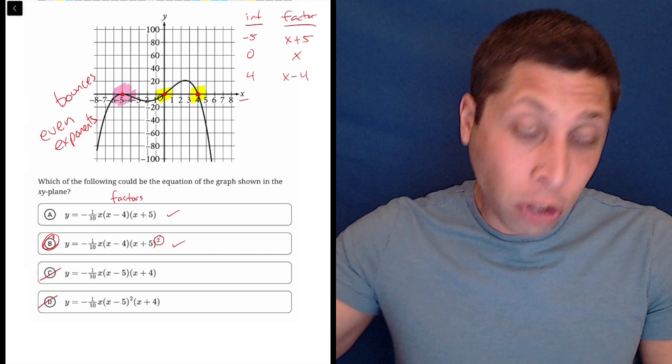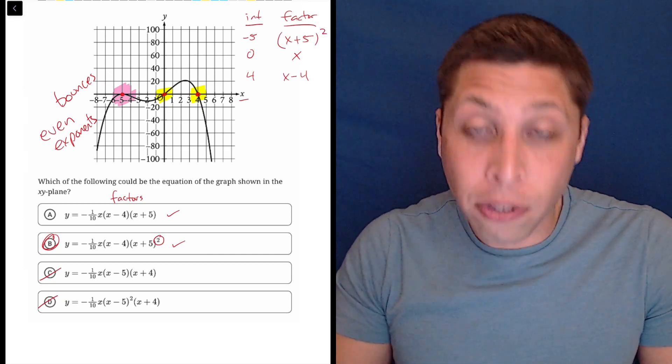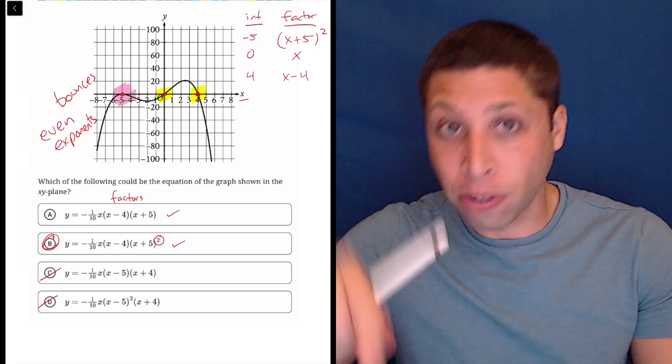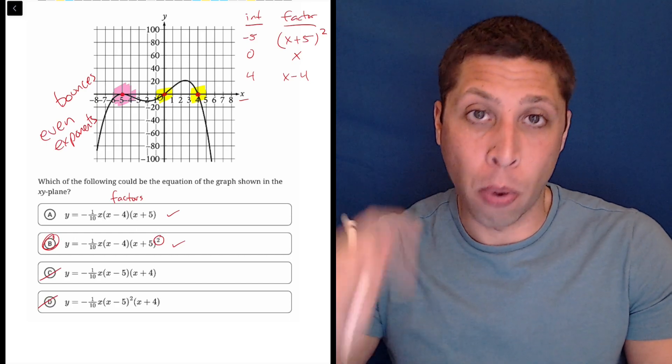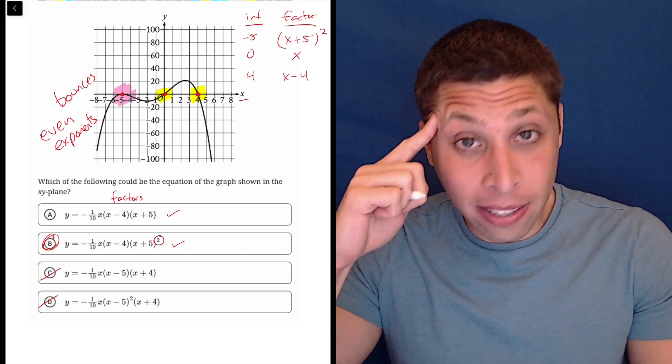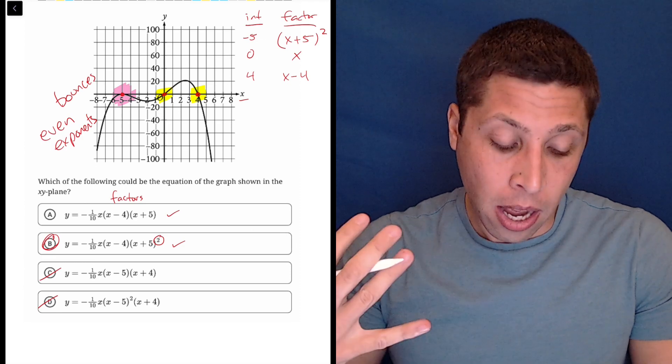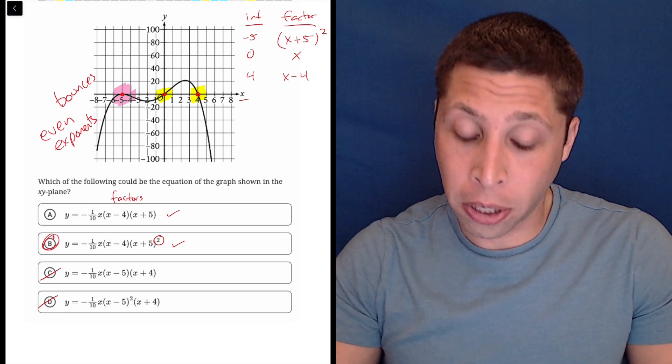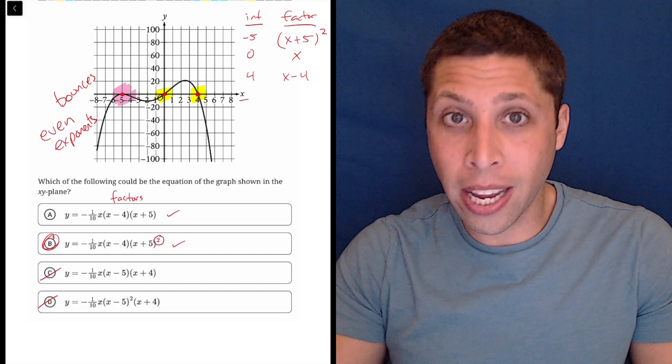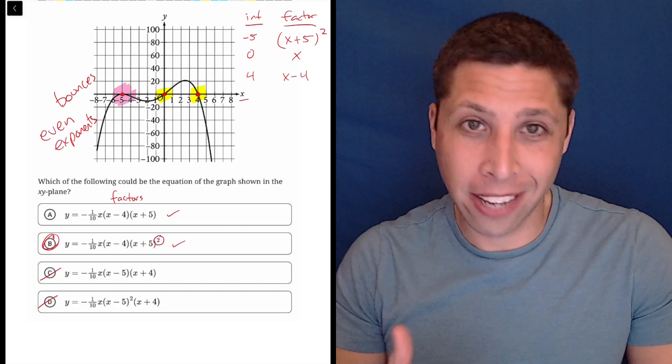And these bounces happen whenever we have even exponents on the factors. So from the start, I would have known that this has got to be an x plus five squared because there's a bounce at that particular point. So that is easy to memorize in my mind. And it is something that would have made this a little bit faster. But I understand that you have a lot to memorize for a test like this.